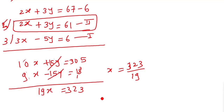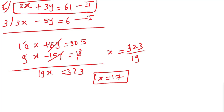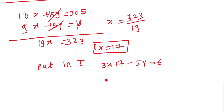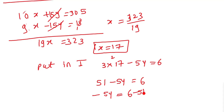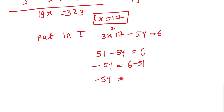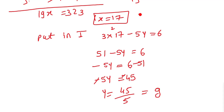Dividing by 19, x = 17. Now put this value into equation number 1: 3×17 - 5y = 6, so 51 - 5y = 6, giving -5y = 6 - 51 = -45, so y = 45/5 = 9. Therefore x = 17 and y = 9.